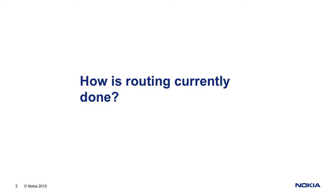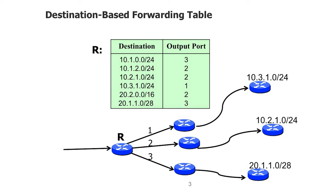So how is routing done in the internet now? It's based on forwarding tables. When router R gets a packet and sees that it's going to a destination, it looks it up in the forwarding table and says, well, if it's going to that destination, I shove it out port 2 or 3 or whatever it is. These routing tables are built by distributed protocols like BGP or RIP.